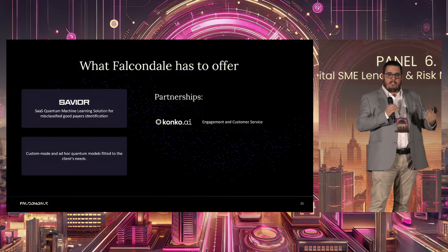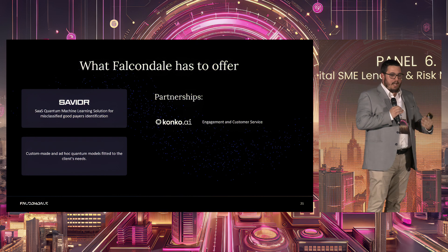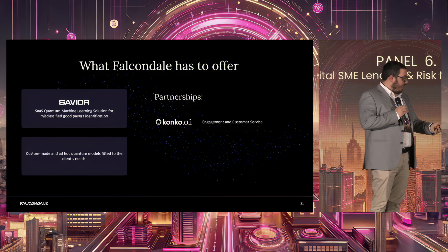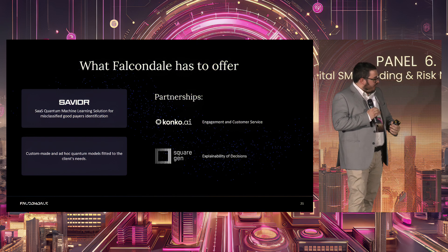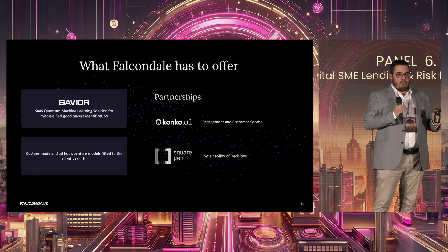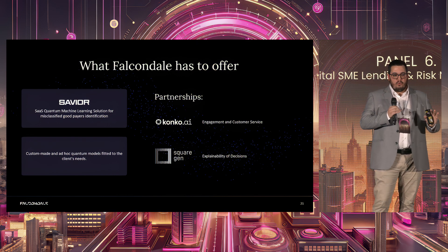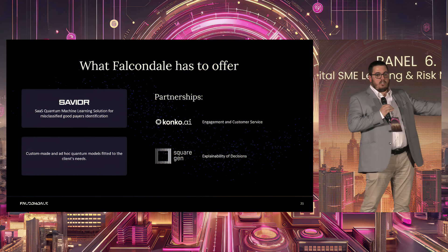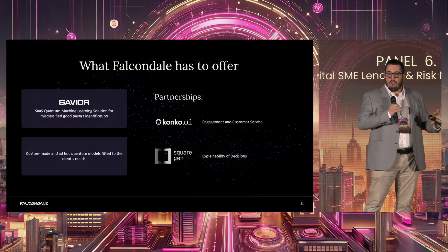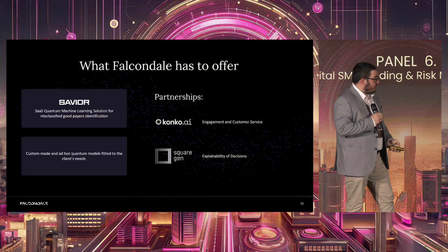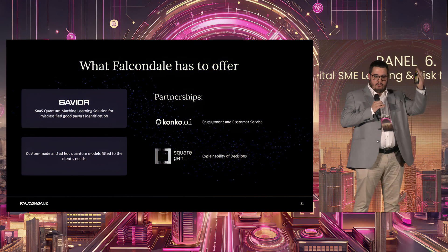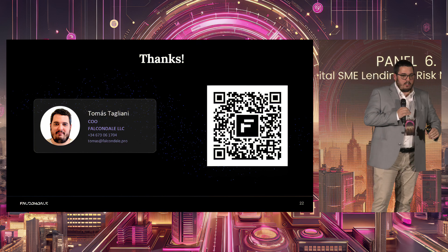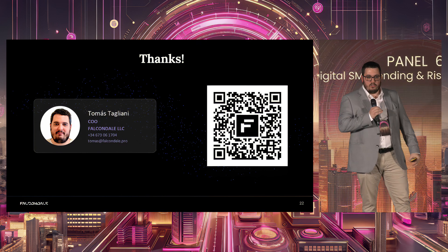These AI agents help avoid companies and people leaving the journey mid-application — for example, when they need to connect open banking, which causes a lot of dropouts, they convince applicants to do it by showing what offers they could get. We also have a partnership with SquareGen, which uses AI for explainability of decisions — generating rationales for why companies or people were rejected or approved. This is really useful for non-technical stakeholders and offers an automatic, instant credit committee. In this whole ecosystem, we try to cater for the entire pipeline that companies go through when they try to lend. Thank you.